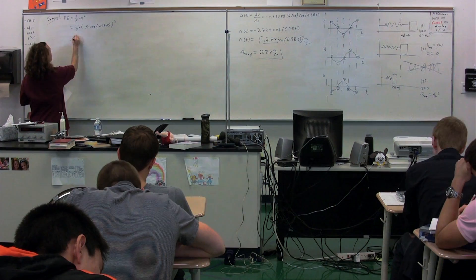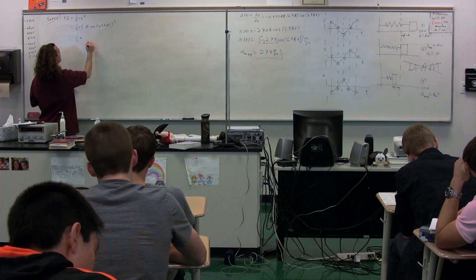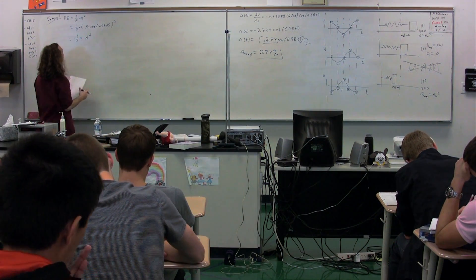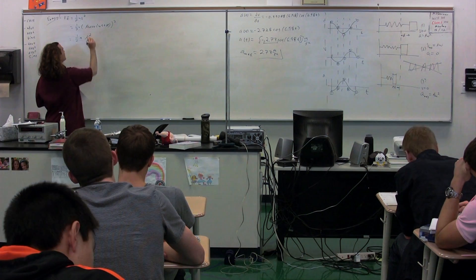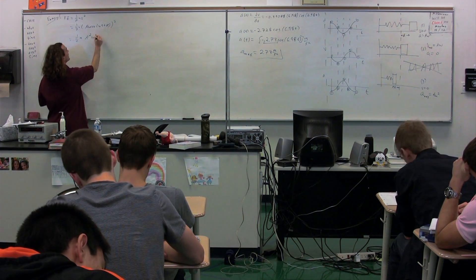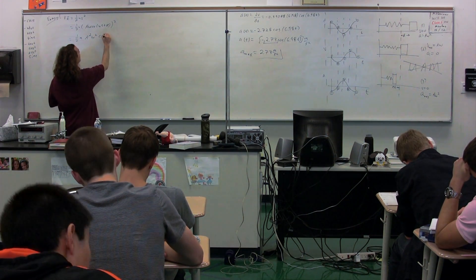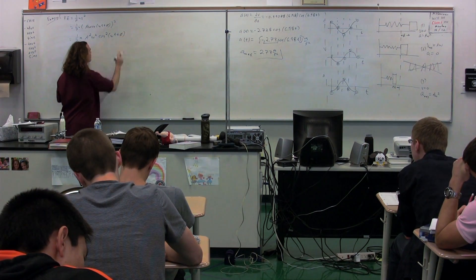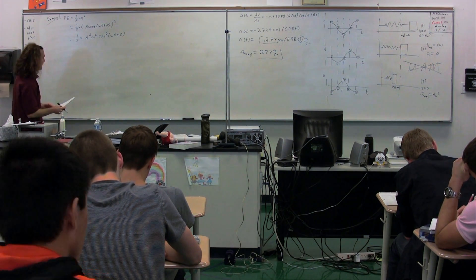So the kinetic energy is going to be one-half times the mass times, well, the amplitude squared times... Oh, we missed an omega. Sorry about that. A squared times omega squared times the cosine squared of omega t plus phi. Just squaring everything that's in there.